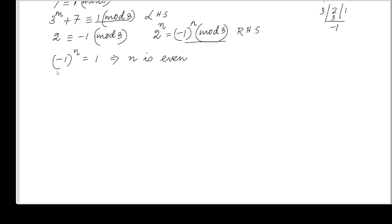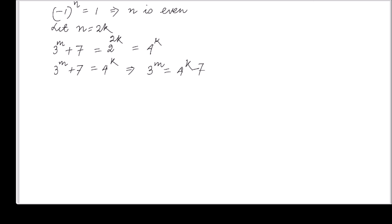Since n is even, let n equal 2k. Then our equation 3 raised to the power m plus 7 equals 2 raised to the power 2k, which equals 4 raised to the power k. Rearranging: 4 raised to the power k minus 7 equals 3 raised to the power m.